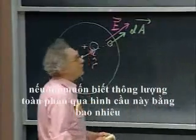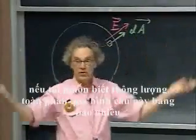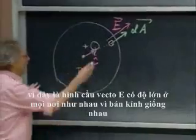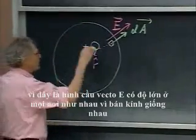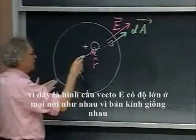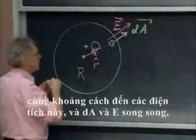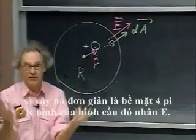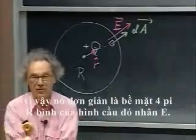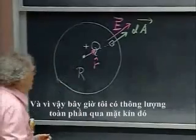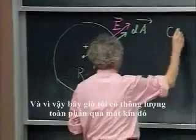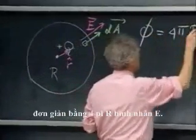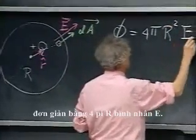If I want to know what the total flux is through this sphere, it's very easy. Since this is a sphere, the E vector in magnitude is everywhere the same because the radius is the same — the same distance to this charge — and dA and E are parallel. So it's simply the surface area, 4πr² of that sphere, times E. So the total flux through that closed surface is simply 4πr² times E.